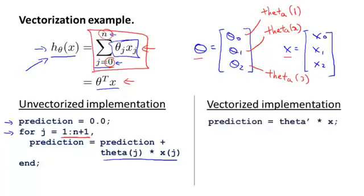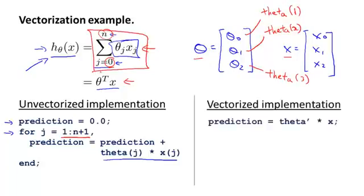In contrast, here's how you would write a vectorized implementation. You would think of x and theta as vectors, and you just set prediction equals theta transpose times x. You're just computing it like so. Instead of writing all these lines of code with a for loop, you instead just have one line of code. What this line of code on the right will do is it will use Octave's highly optimized numerical linear algebra routines to compute this inner product between the two vectors, theta and x. And not only is the vectorized implementation simpler, it will also run much more efficiently.